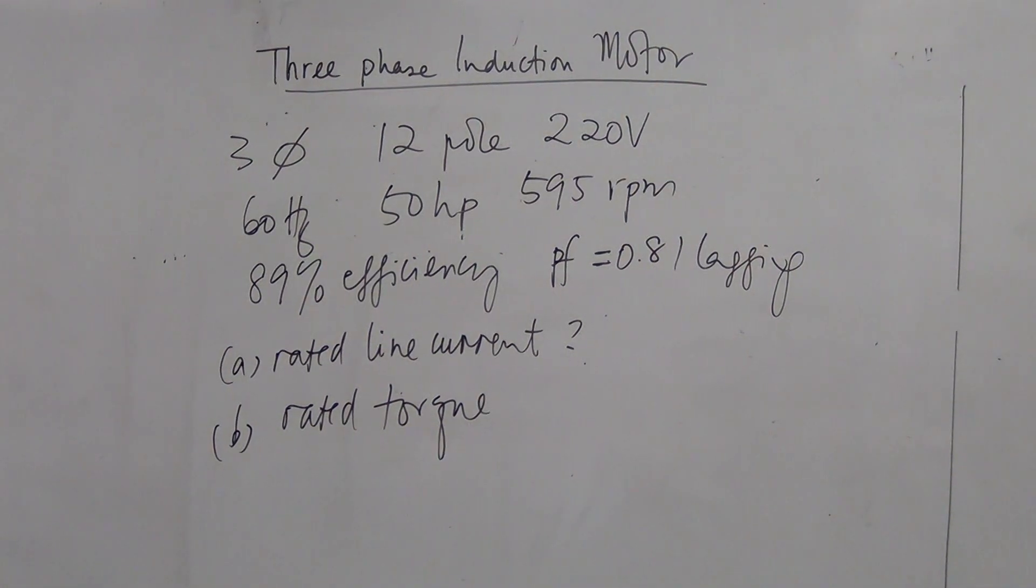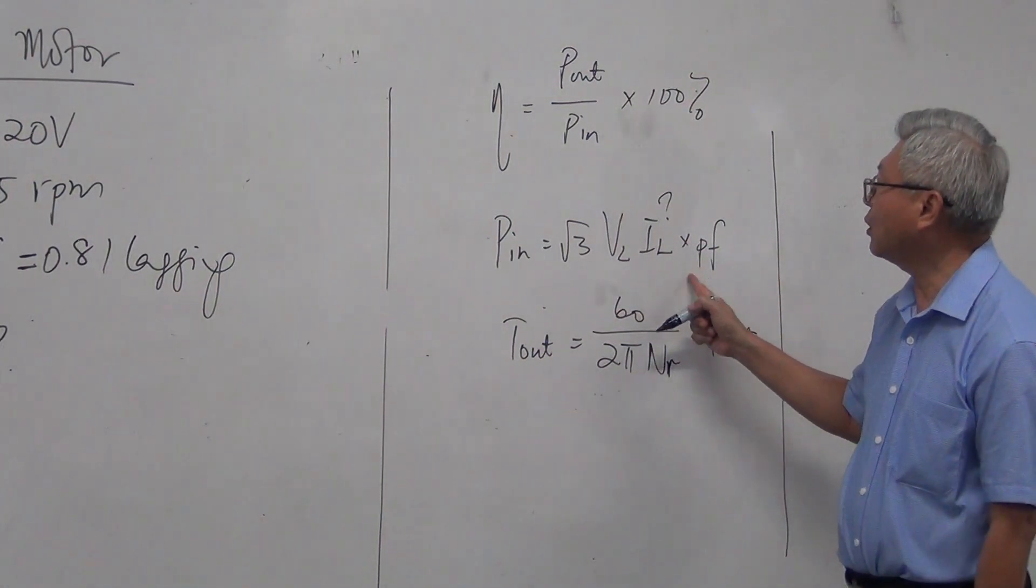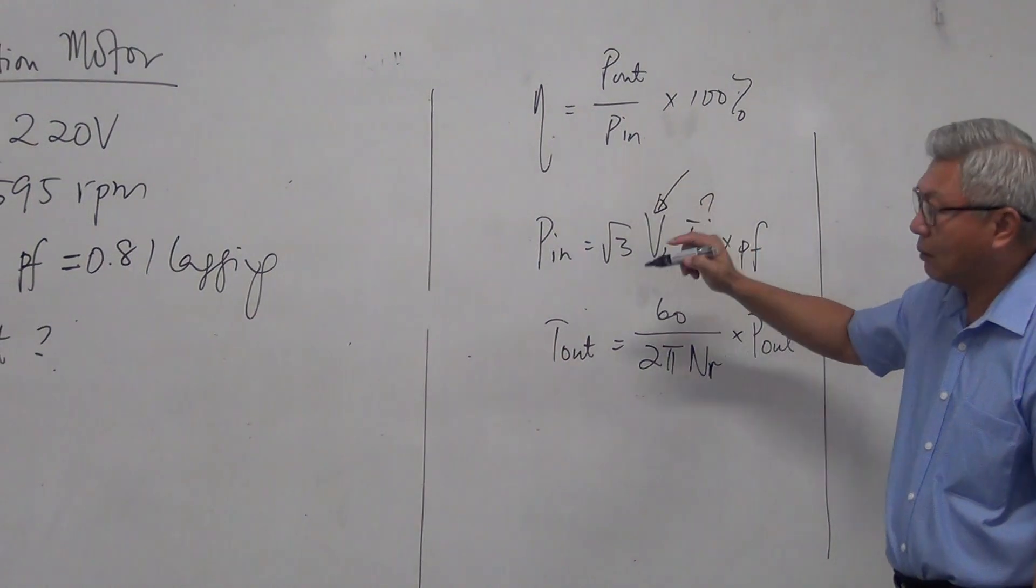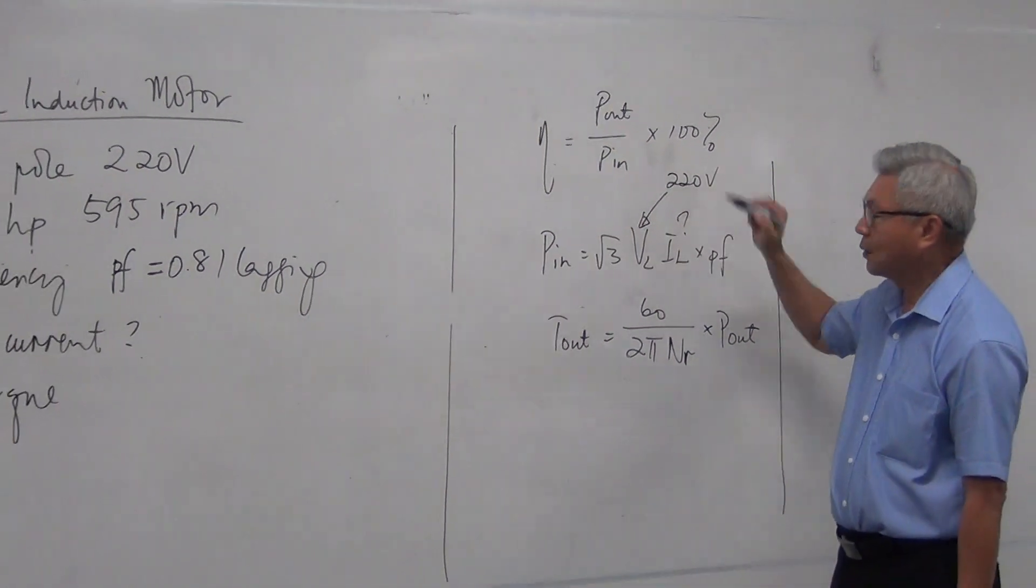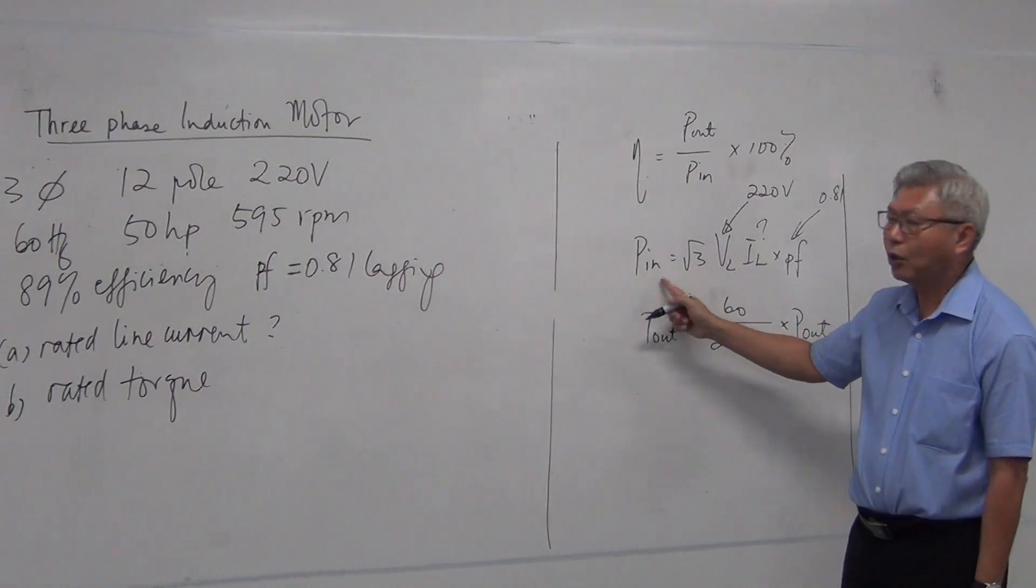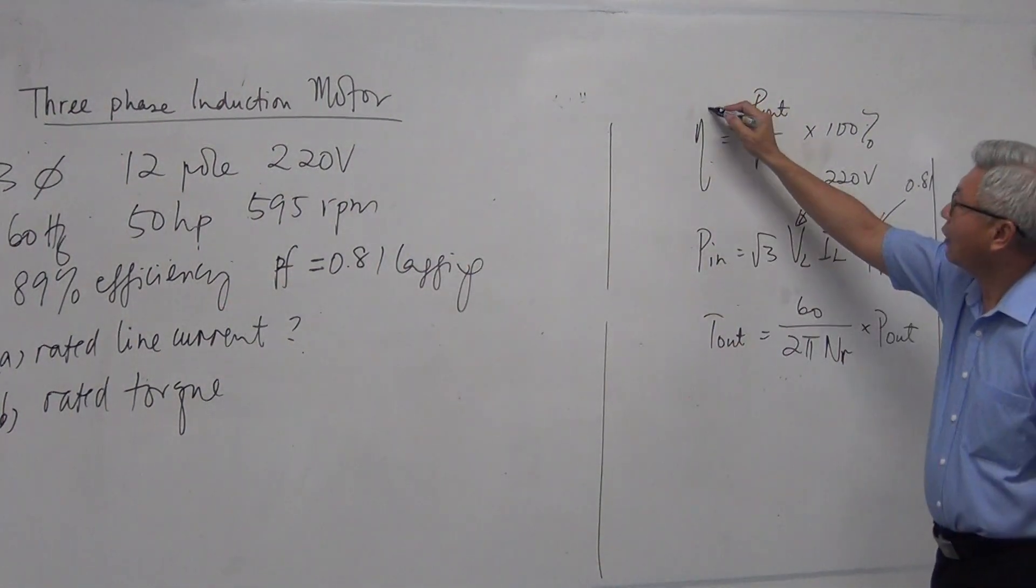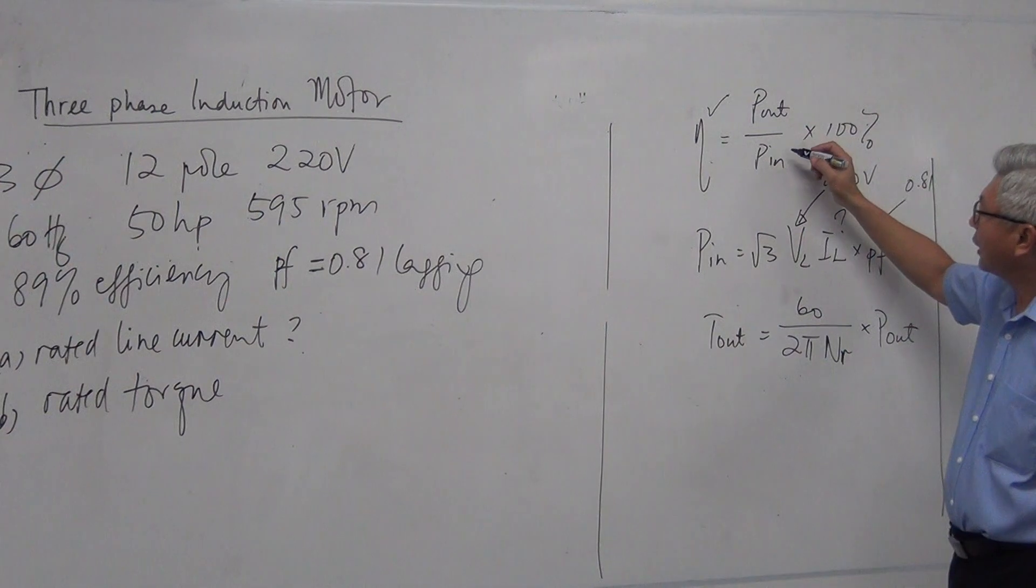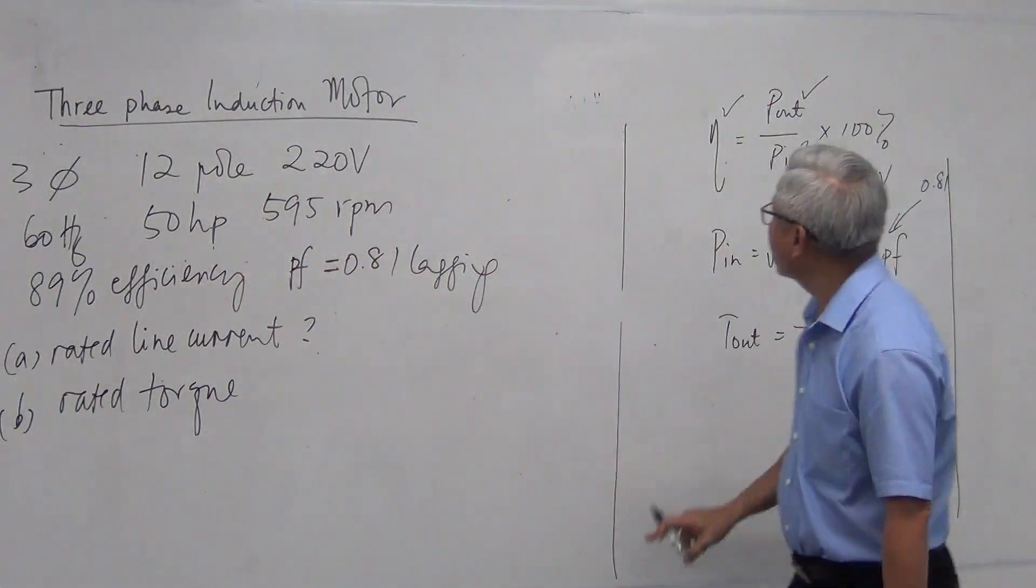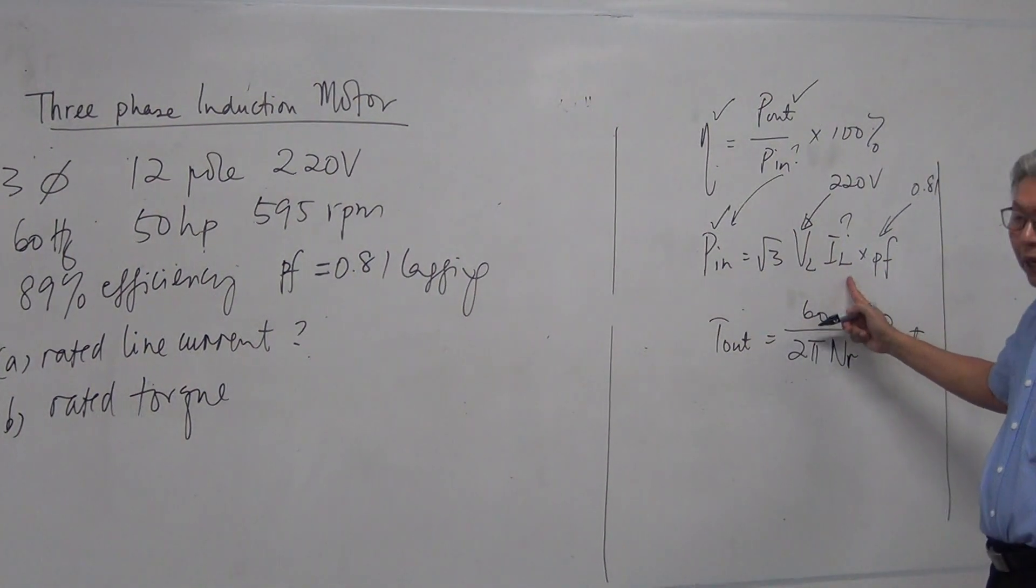Now, look back on our formula here. We need to find line current. In other words, we need to know this. So we need to use this formula. In order to use this formula, we need to know the other parameters. So let's interpret the question. Line voltage, yes, I'm given 220 volts. Power factor is equal to 0.81. Input power, I do not know. But I'm given efficiency. So if I have efficiency and I need to know input power, if I know output power, output power is given, 50 horsepower. So with that, I can find input power. And when I find input power, I put it to here, then my line current can be found.